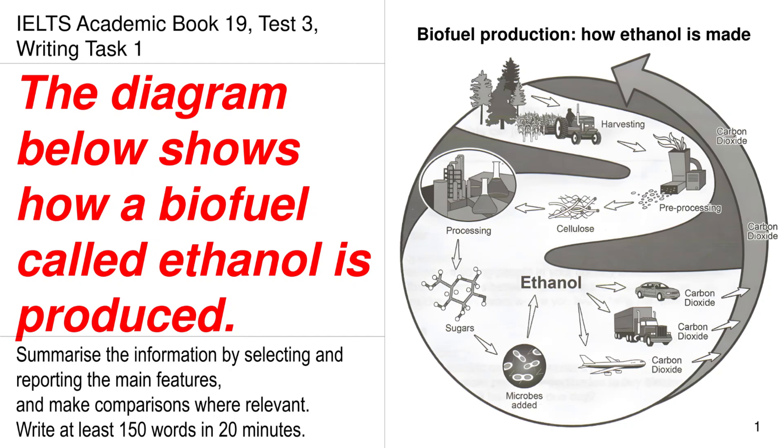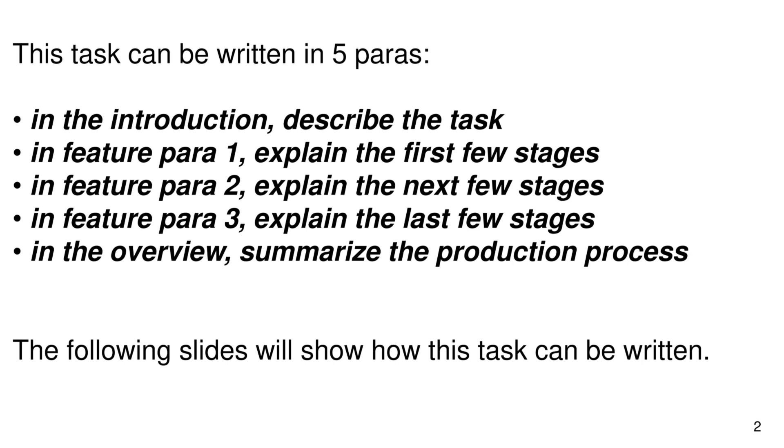Today we are going to discuss the IELTS Academic Book 19, Test 3, Writing Task 1. The diagram below shows how a biofuel called ethanol is produced. This task can be written in five paragraphs. In the introduction, describe the task.